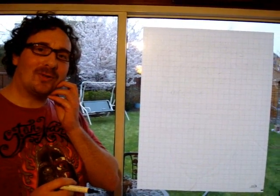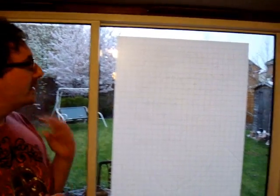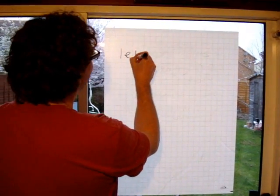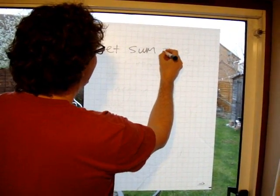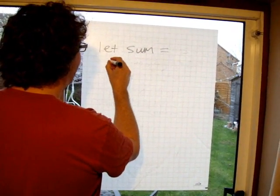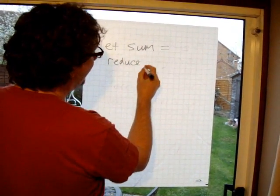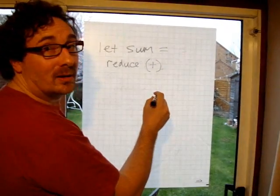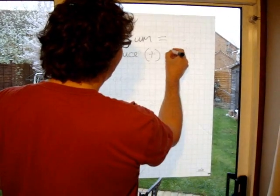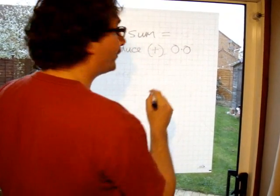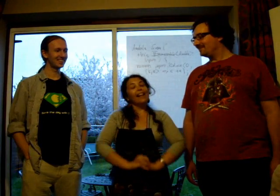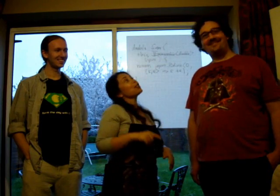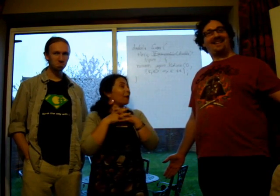I wonder how easy it would be to do a sum function. Let's have a look. So we need a sum function, and we could perhaps partially apply it. We call reduce, we'll need to add all of the items, and we'll need to start from zero. So this function will work for all floats. I think I'm going to choose F# to do my sums. That's fine.